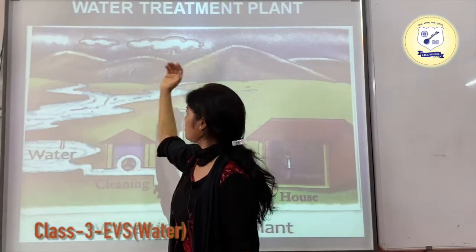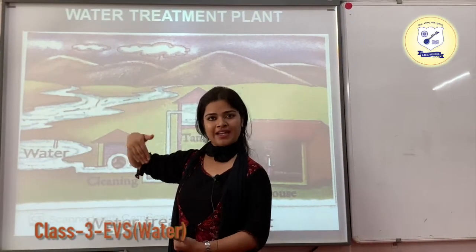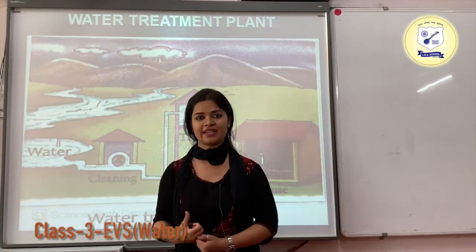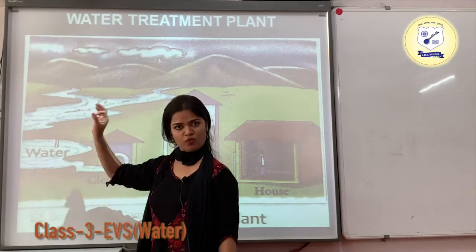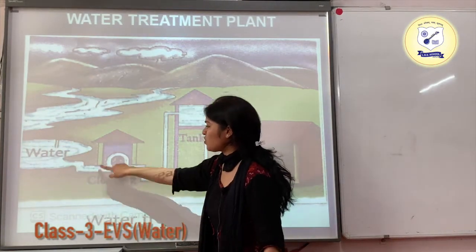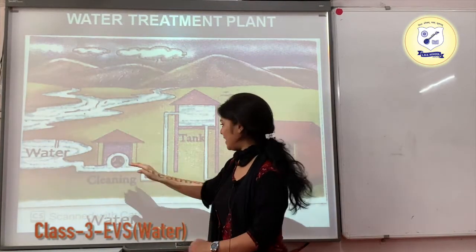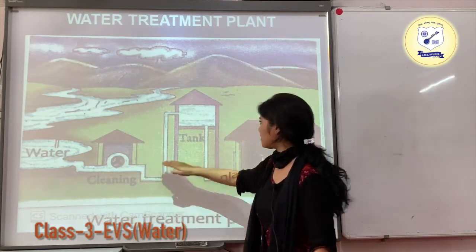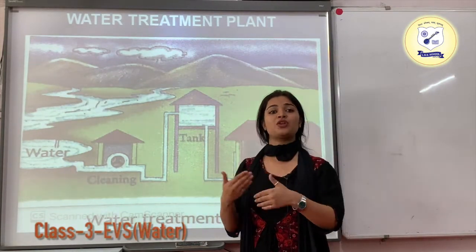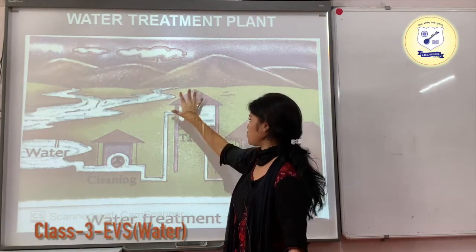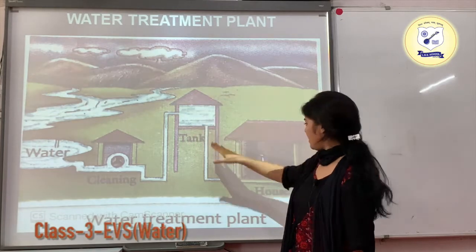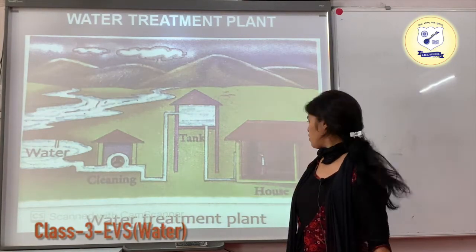A river is a source of water. This water comes into a cleaning area where it gets cleaned, and further it is stored in a tank. From that tank, clean water is supplied to different houses and places.